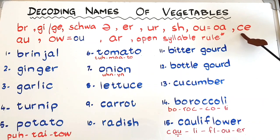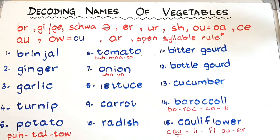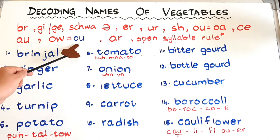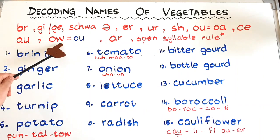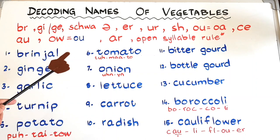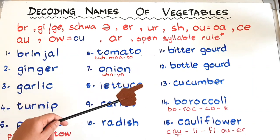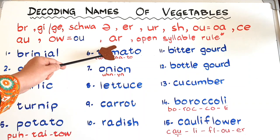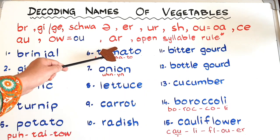Then the soft C rule: whenever C is followed by E, I, or Y, it says 'sss'. The link for this video is also in the description box. 'AU' says 'aw', as in 'August'. 'OW' says 'o' but it also says 'ow' as in 'out' or 'ouch'. For these alternate spellings I'll recommend my video — the link is in the description box.